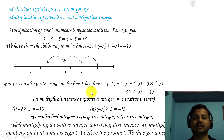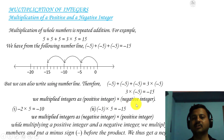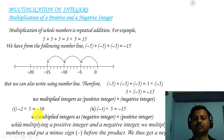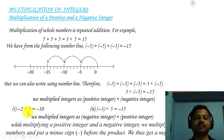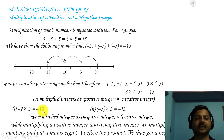By observing this, we can say that when multiplying integers: positive into negative gives a negative result. For example, minus 2 into 5 equals minus 10. Here minus 2 is the negative integer and 5 is the positive integer. 5 twos are 10, and minus into plus is minus.